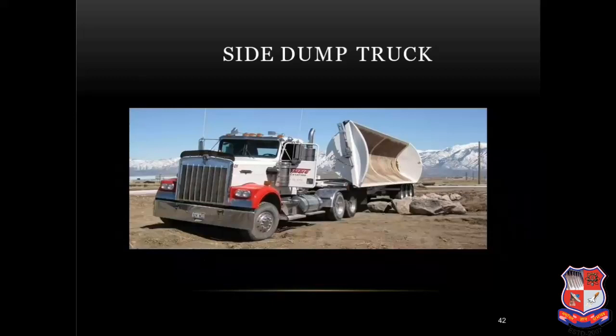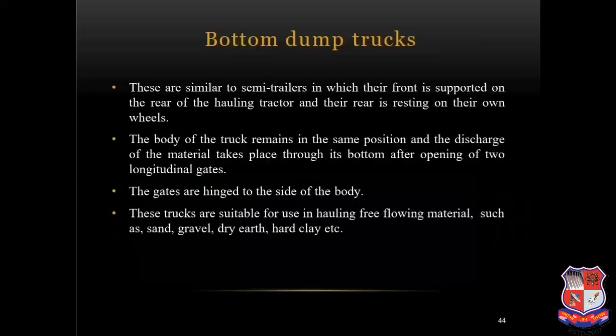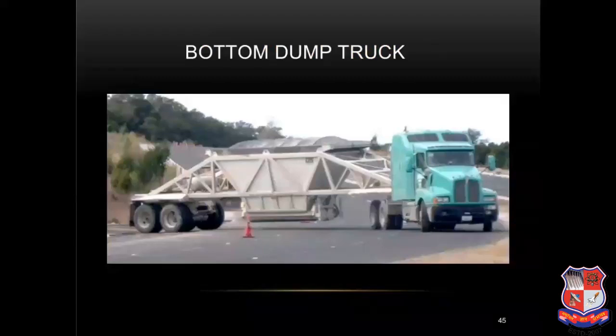Here you can see the side dump truck and the rear dump truck in the images. Bottom dump trucks are similar to semi-trailers in which their front is supported on the rear of the hauling tractor and the rear is resting on their own wheels. The body of the truck remains in the same position and the discharge of material takes place through its bottom after opening of two longitudinal gates, which are hinged to the sides of the body. These trucks are suitable for hauling free flowing material such as sand, gravel, dry earth, hard clay, etc.